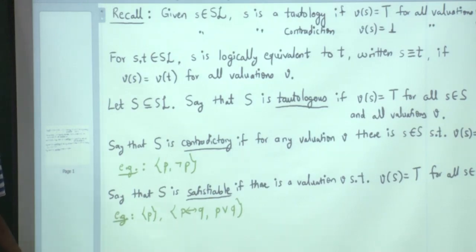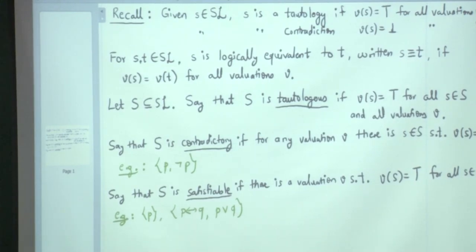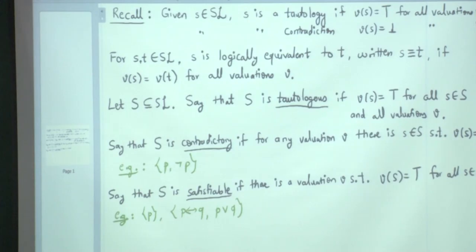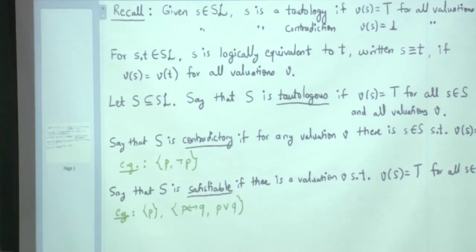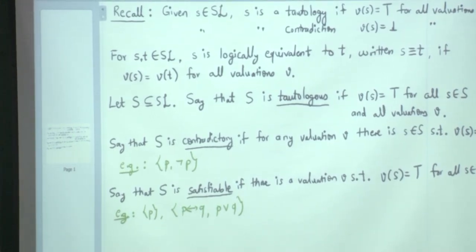Given any set, you can determine whether it is satisfiable or contradictory. You have to construct truth tables for all the formulas in capital S and make sure that there is at least one row of the truth table which makes all those formulas true.